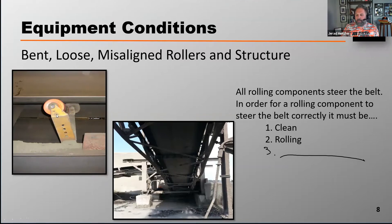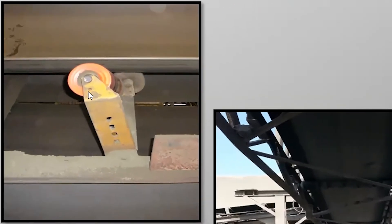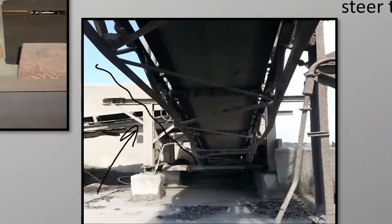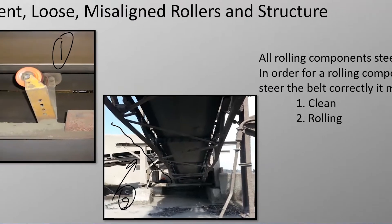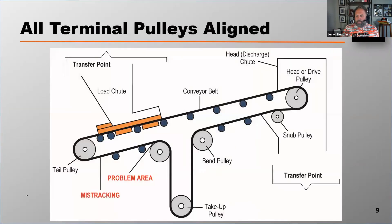So if I've got rollers that are out of alignment, like I see in photo one, or if I've got structure misalignment like I see in photo two, then I'm going to cause that belt to mistrack.